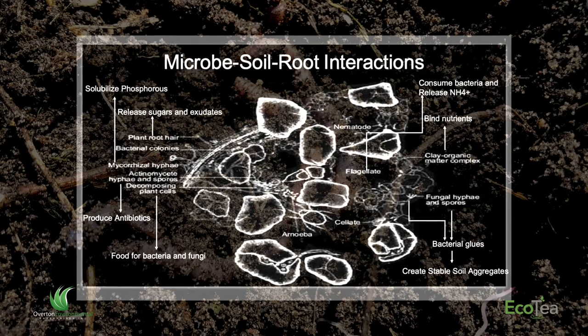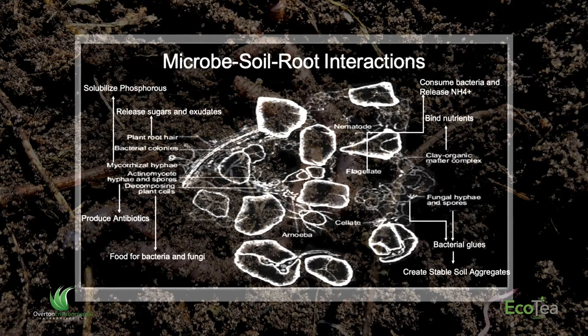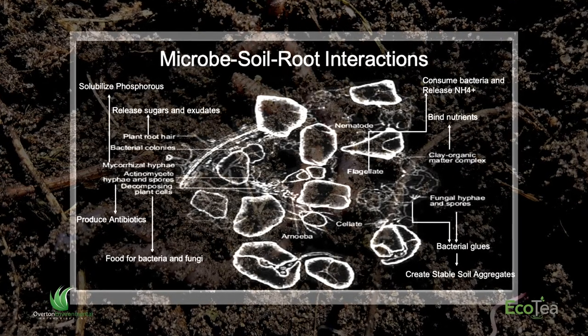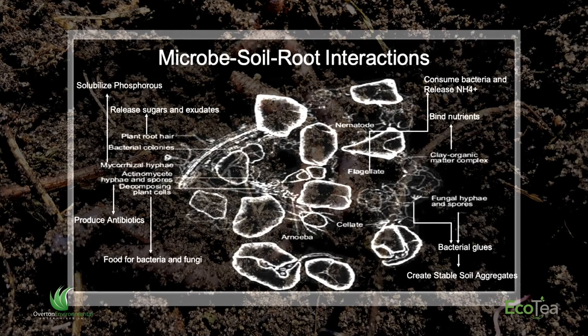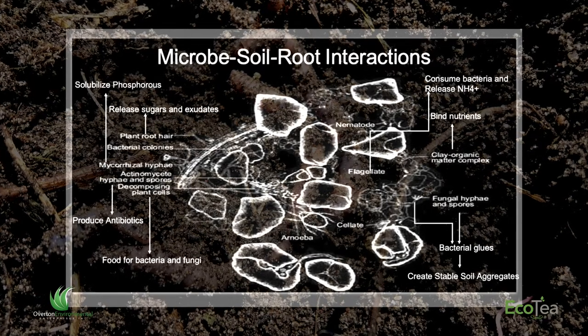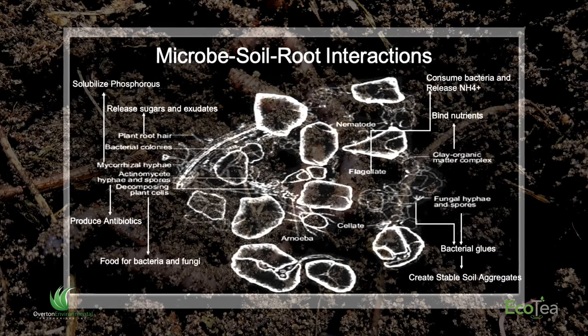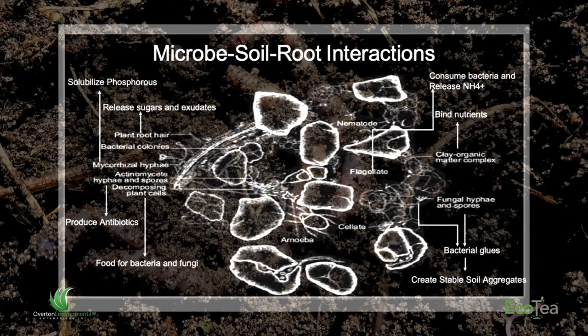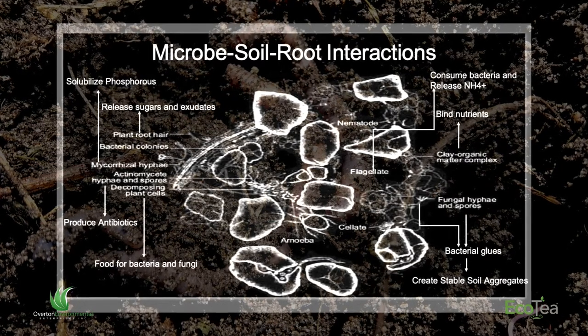Here we're looking at a schematic of a soil colloid with root hairs, bacterial colonies, mycorrhizae, actinomycete bacteria, nematodes, flagellates, clay and organic matter complex — basically a soil aggregate with good airflow and good microbial life. This is what you want to see. Most of this action is happening in the root zone, where microbes are releasing nutrients through mineralization of organic matter and through their activity in the form of feces.